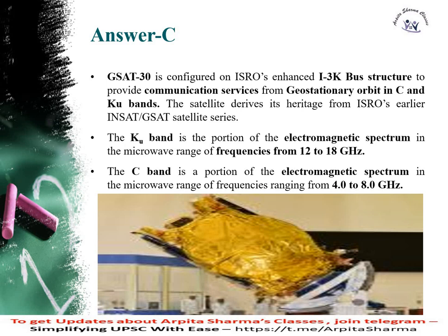The answer here is C. GSAT-30 is configured by ISRO using an I and K3 bus structure. It provides communication services from geostationary orbit in C and KU bands. The KU band is an electromagnetic spectrum with a frequency from 12 to 18 GHz, while the C band is also an electromagnetic spectrum but has a frequency from 4 to 8 GHz. You can see the image of GSAT-30.